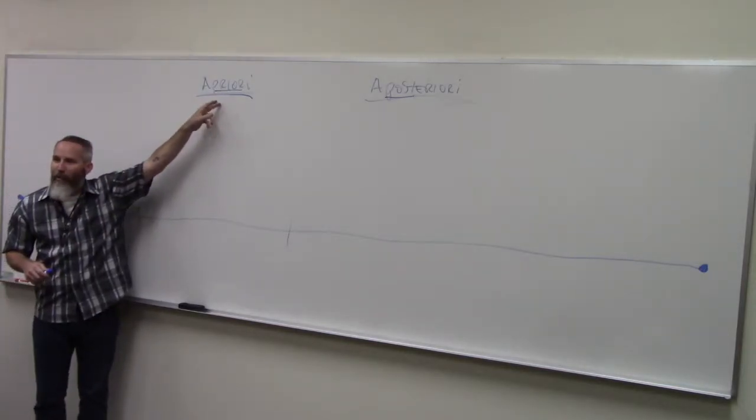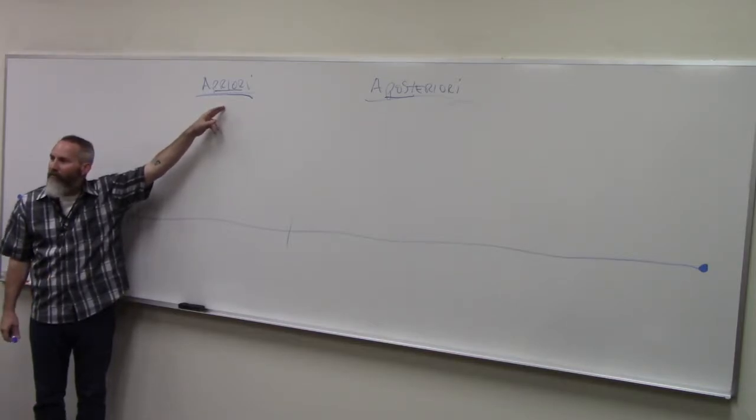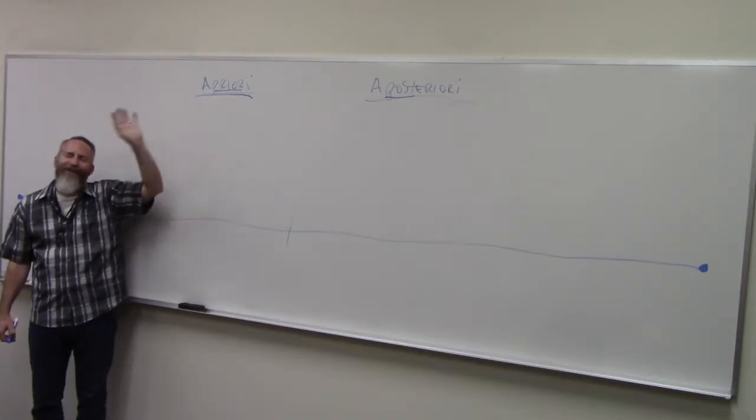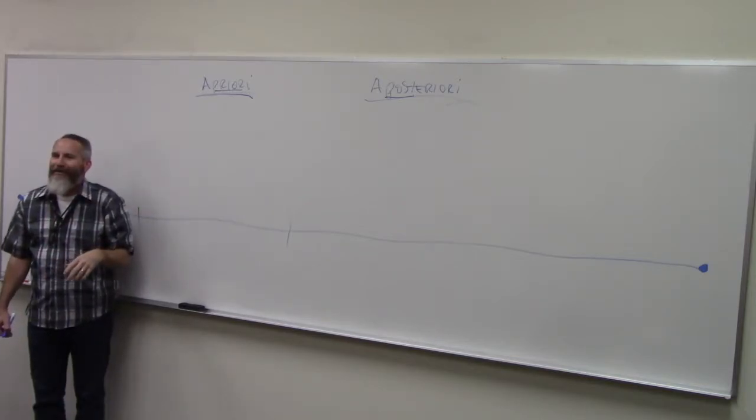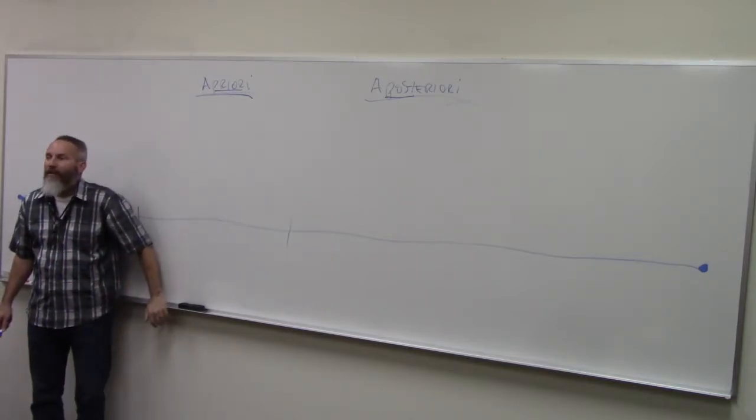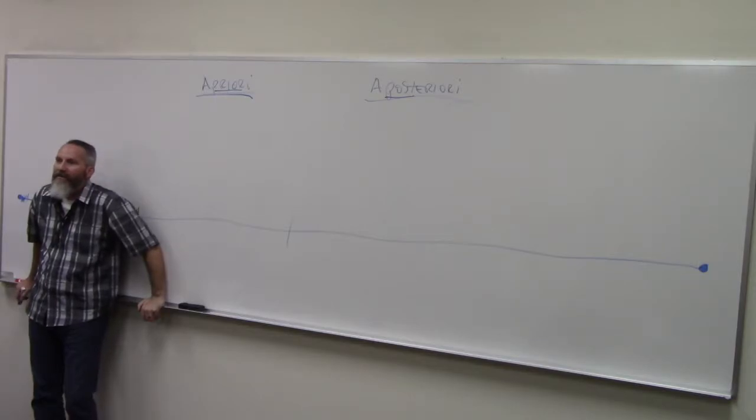So who's right here? A priori tells you it's impossible to pass an infinite number of points in a finite amount of time, yet we all go, oh, shut up. Why don't we all go, oh, crap, you're right. And there we have it. We can't move.